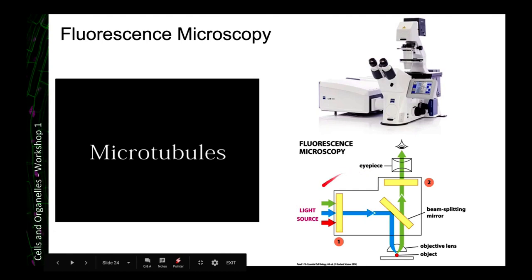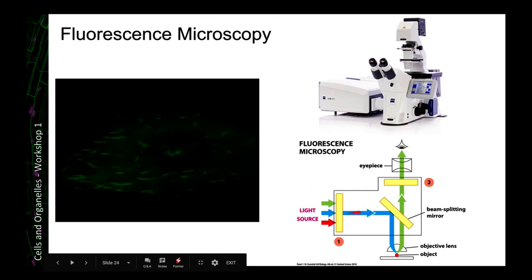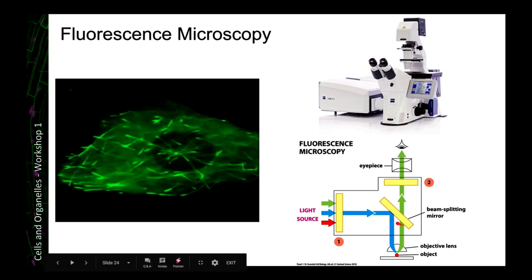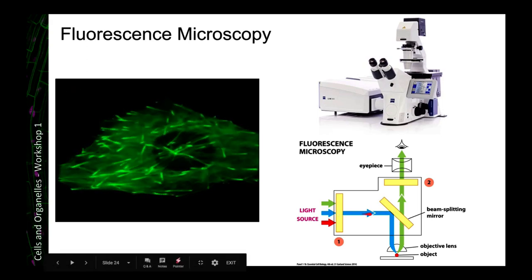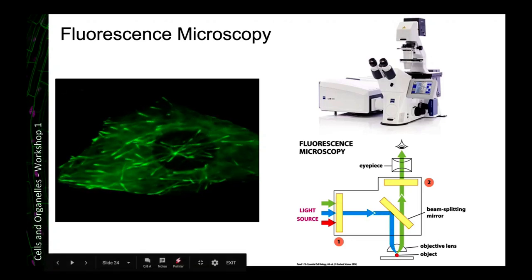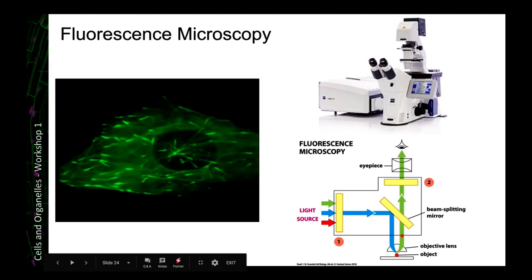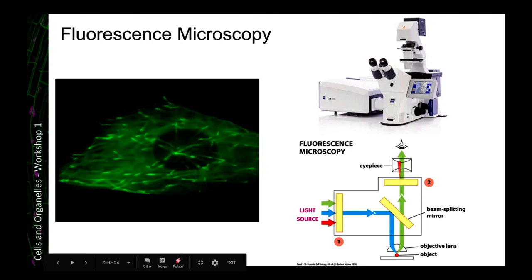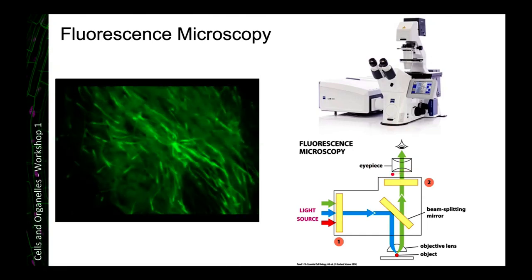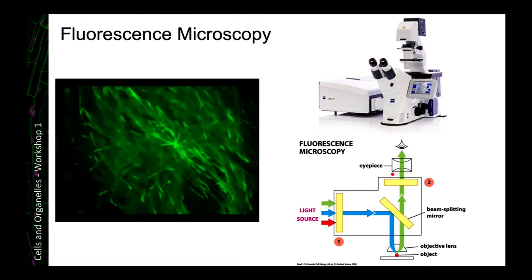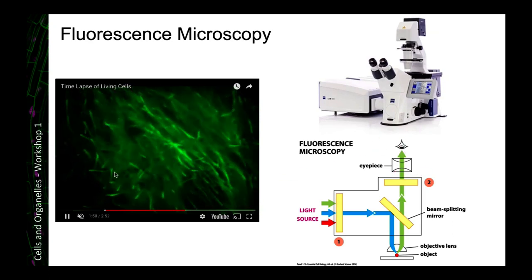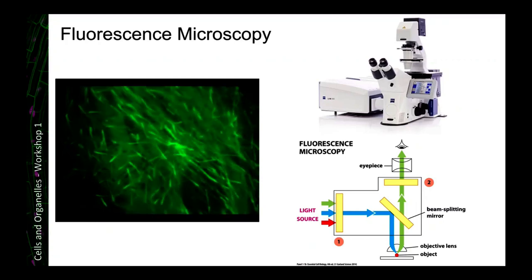And the way that these work is that you have your light source coming in. And then what we do is to separate off into particular colours. So we have what's called a beam splitting mirror. So only light of a particular frequency goes down onto your sample. Then the light bounces back off that sample. Again, it goes through a mirror and then it goes up to an eyepiece. Or if you're using laser beams, then it might go to a digital detector. So you can get these beautiful time lapses of living cells.